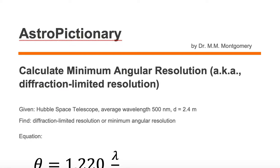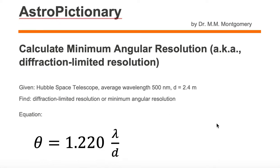We're going to calculate the minimum angular resolution, a.k.a. diffraction-limited resolution. We are given the Hubble Space Telescope, which has an average wavelength of 500 nanometers and a diameter of 2.4 meters. We want to find the diffraction-limited resolution or minimum angular resolution.